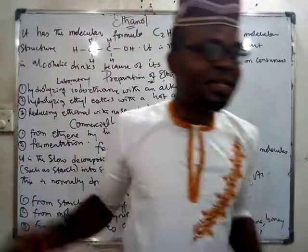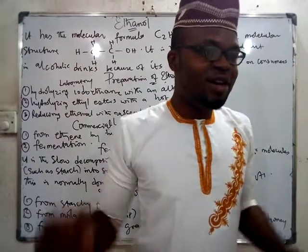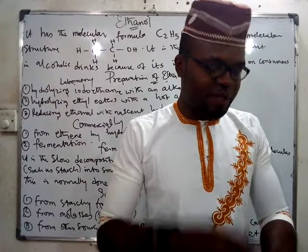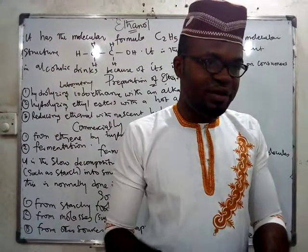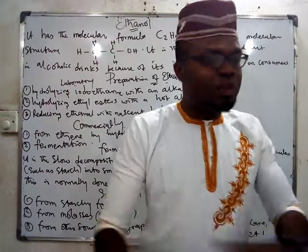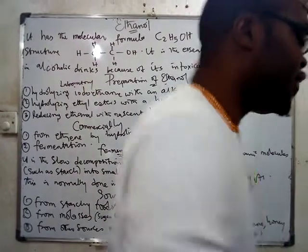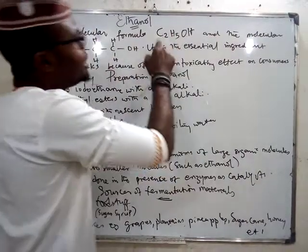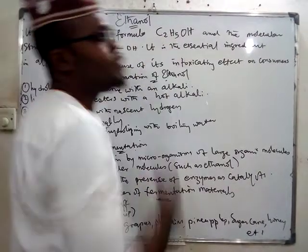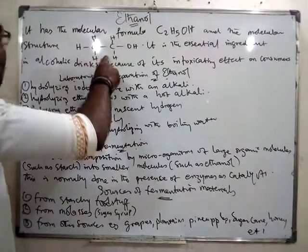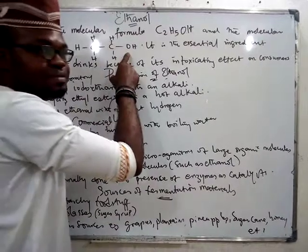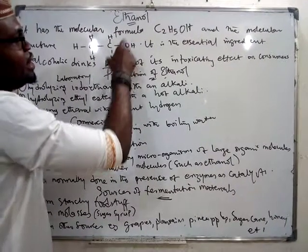Ethanol is very important and is used in doing many things. When you get to the hospital and something is burning, you can apply it and it relieves you. It is used in many products and forms ingredients for many things. It has the molecular formula C2H5OH — that is the molecular formula.